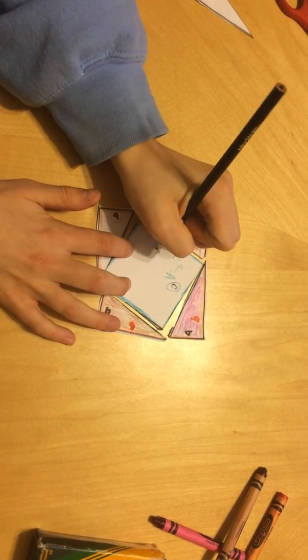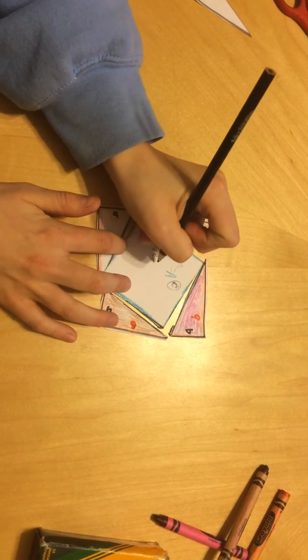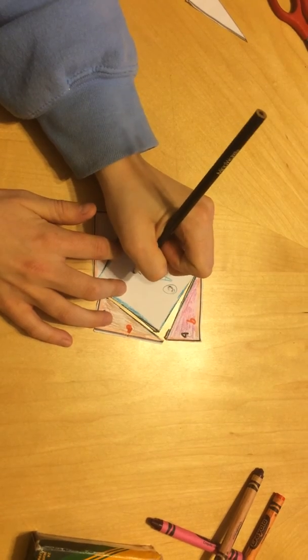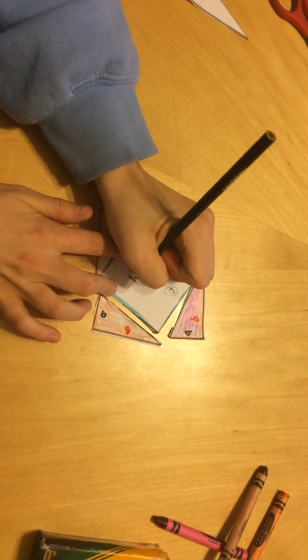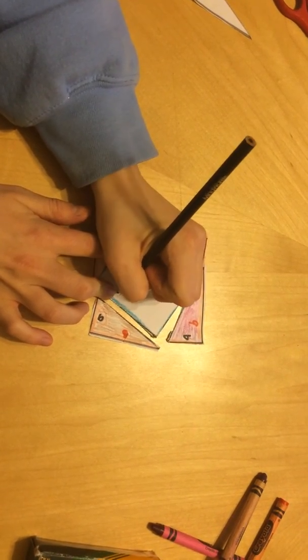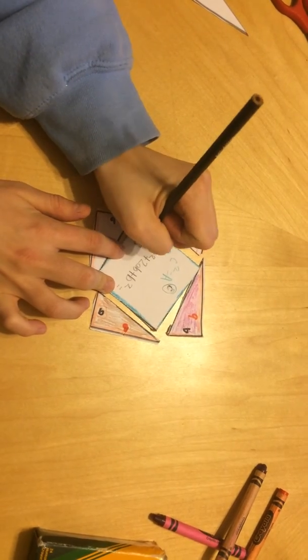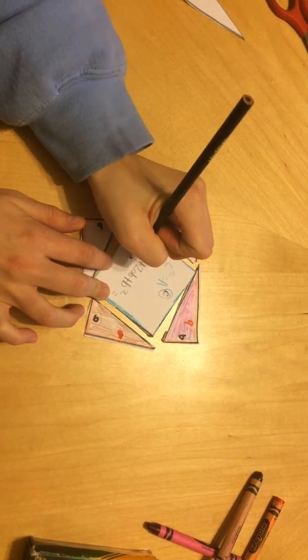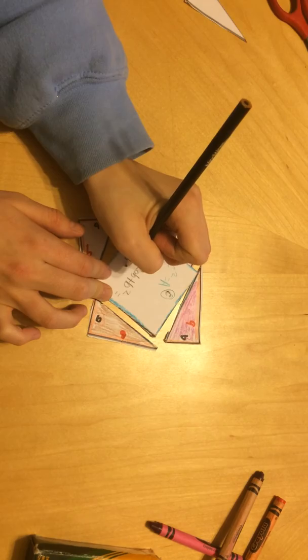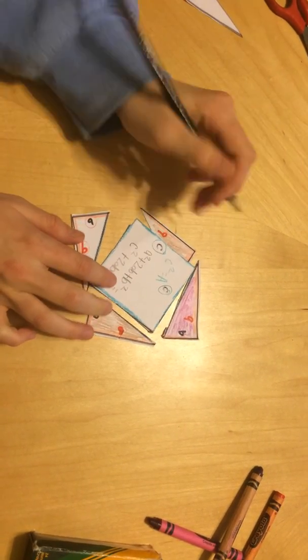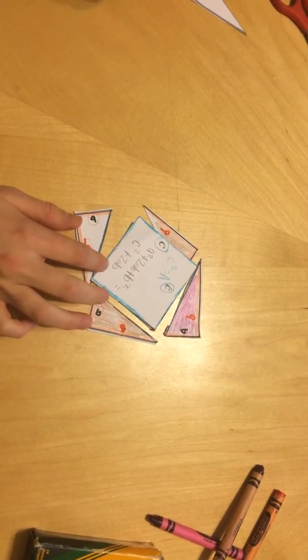A squared plus 2 a B plus B squared equals C squared plus 2 a B. And then you are going to FOIL that.